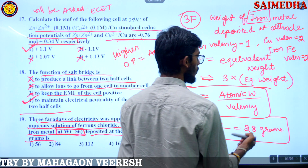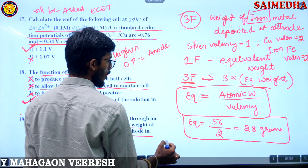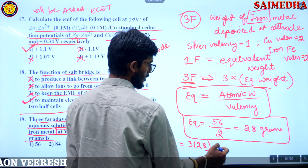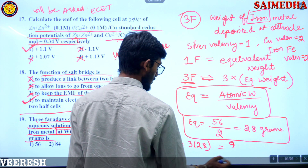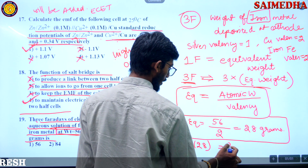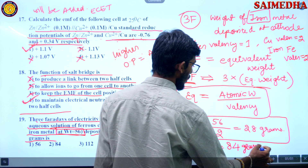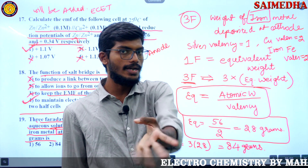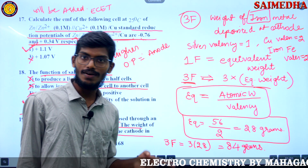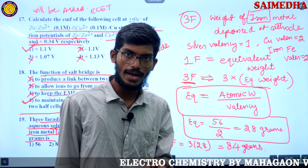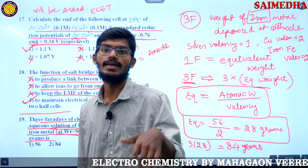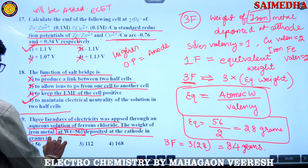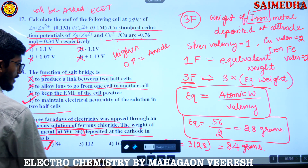Equivalent weight of iron is 28 grams. So 3 Faradays will give 3 × 28 = 84 grams of iron deposited. That is the answer — 84 grams. Note: 56 grams would be for 2 Faradays, 84 grams is for 3 Faradays — which is the asked question.